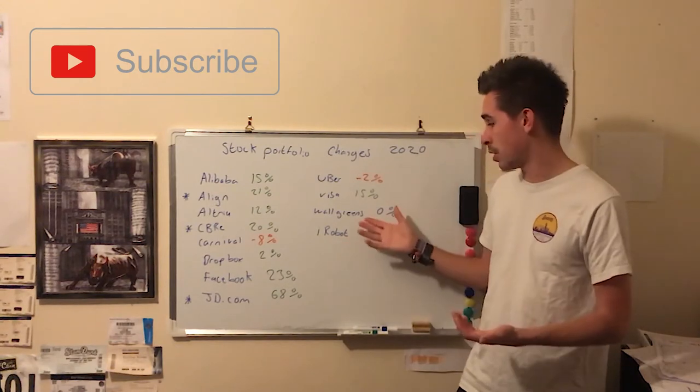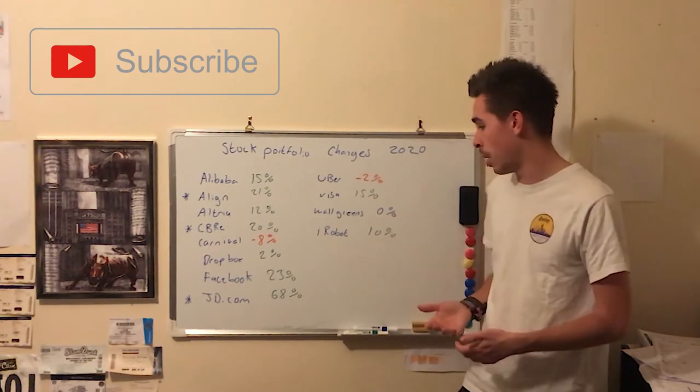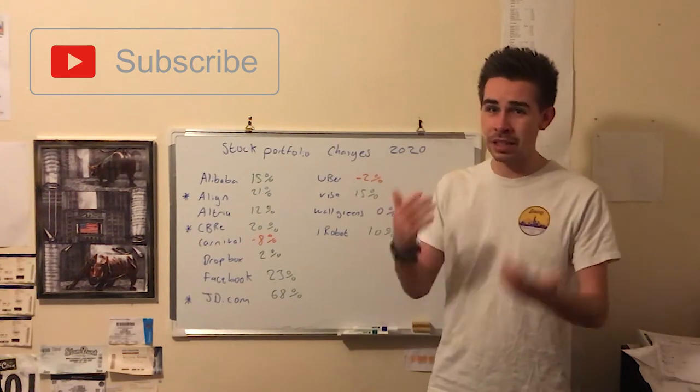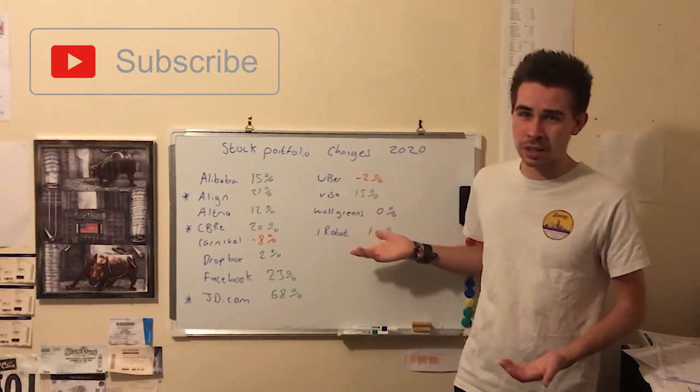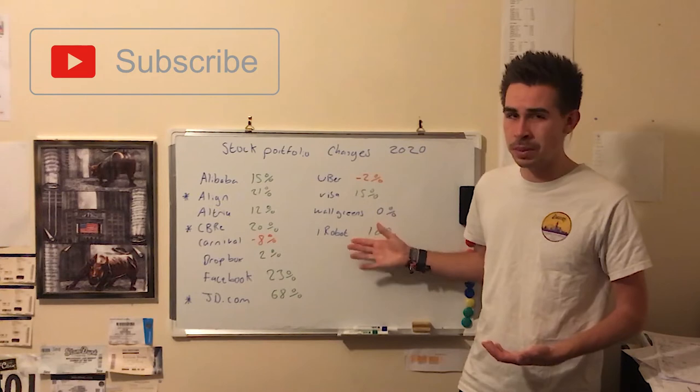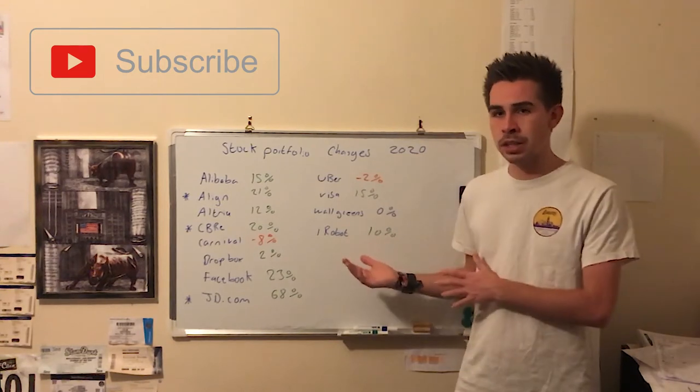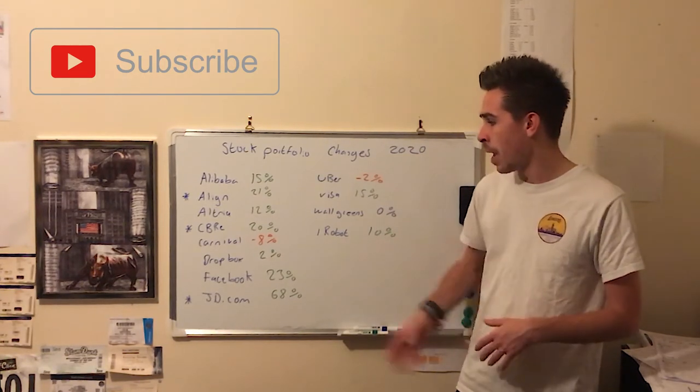Walgreens, it's just totally flat, so I'm not going to sell that one at the moment. iRobot's up 10%. It's another company that I'd like to buy more of because I see that going up 40 to 50%. That'll be interesting next year depending on what happens with the China trade war.